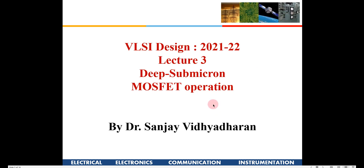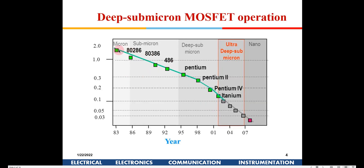In the last class we saw the ID equation of a long channel device. As we move into deep submicron technology, several short channel effects come into play, which we will discuss today. Deep submicron refers to devices where channel length is below 300 nanometers — so 180 nanometer technology falls here. Below 100 nanometers is called ultra deep submicron, which is where we are working presently.